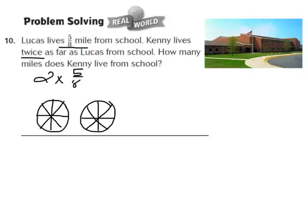Now I go back to my fraction and look at the numerator. That numerator is a 5, so what that tells me is I need to shade in 5 of those parts. Go ahead and pause your video and shade in 5 of those equal parts. Your model should look similar to mine. We now have 5 of our 8 equal parts shaded in each circle, so let's count how many total parts are shaded.